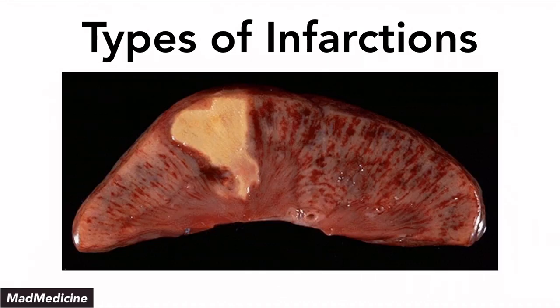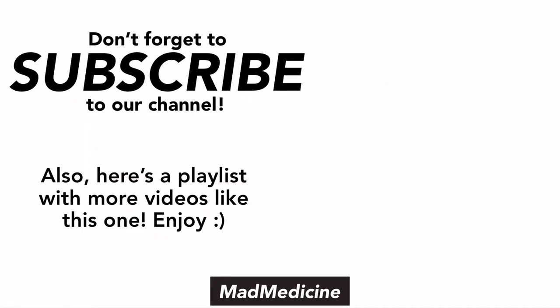This is what a pale infarction looks like — very clear, very straightforward. This is clearly very pale. Unlike the red infarction, which can sometimes get difficult to differentiate, a pale infarction is clearly distinct from the tissue. It is very pale and you have no blood perfusing that tissue. And with that being said, that is everything for cellular infarction. I hope this was helpful. Don't forget to subscribe to our channel because your support really means a lot to us. Thank you again and we'll see you real soon.